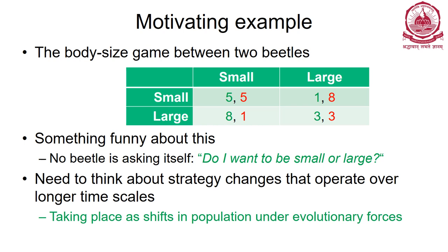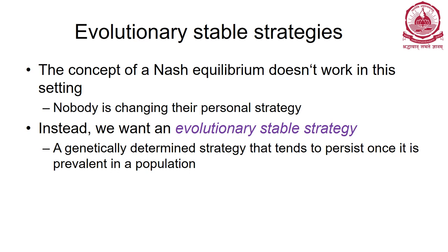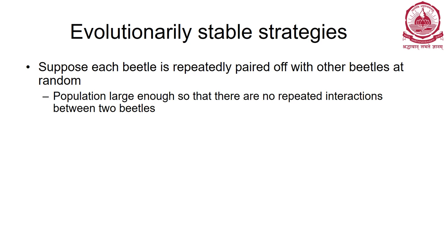The beetle is essentially asking itself: do I want to be small or large? We must look at this randomly - say there are a thousand beetles, 950 small and 50 large. Randomly pair any two and let them interact. Whenever a small and large interact, the small beetle gets very little food and is almost going to die. Over time, the large will survive. The concept of Nash equilibrium doesn't work here - instead we have evolutionary stable strategy, a genetically determined strategy that tends to persist once established in a population.